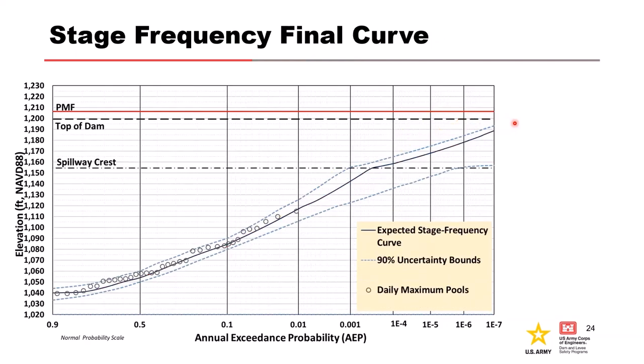This is our final stage frequency curve that was used to inform project risk. It applied volume frequency results that incorporate pre and post dam systematic data, informative prior distributions on the skew parameter from the regional analysis, and prior distributions on quantiles or AEPs using our precipitation frequency and rainfall runoff modeling.